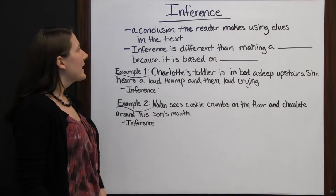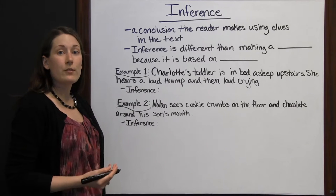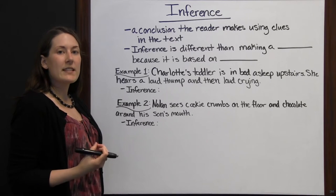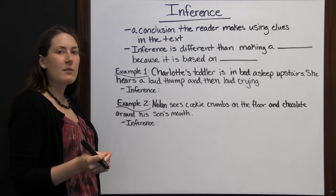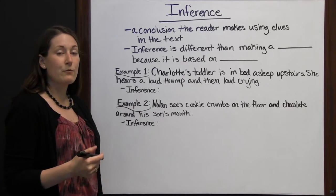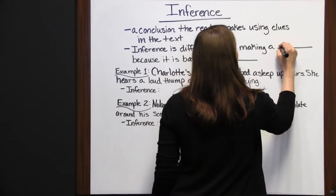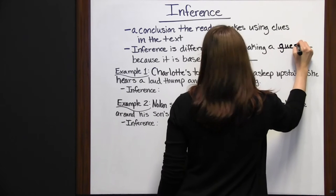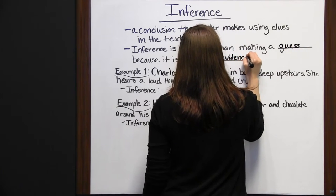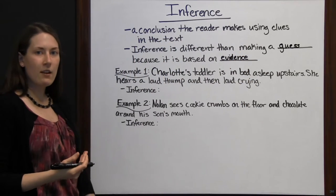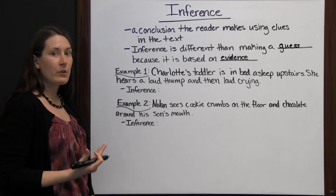Inferences are conclusions that a reader makes using clues in the text. An author may not explicitly say something, but they leave little hints behind — you have to connect the dots to form a conclusion. Inference is different than making a guess because it is based on evidence. You read, you pick up on those clues or hints that the author leaves behind, and you put them all together to form your inference.